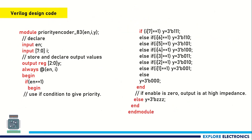To implement this in Verilog code, we require an if-else statement, because we need to check: first, if enable is equal to 1; then if i7 is equal to 1, the output will be encoded to 111 irrespective of other inputs. If i7 is 0, it enters the else part and checks if i6 is equal to 1 — then output is encoded to 110. If i6 is also 0, it checks i5, encoded to 101, and so on down to i0. If all 8 bits are 0, the output is high impedance, equal to ZZZ.